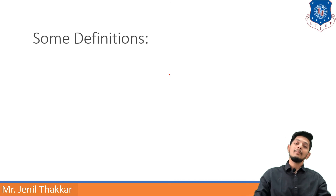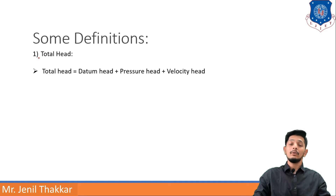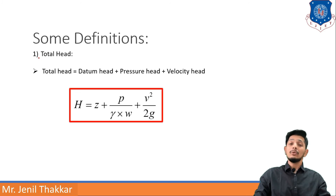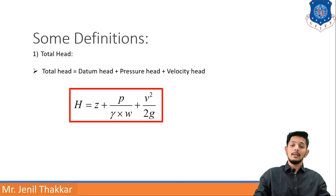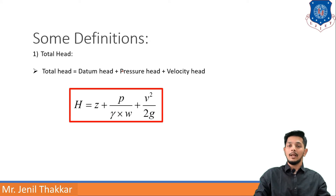Let us move to some basic definitions. Total head is made up of three components: datum head, pressure head, and velocity head. The formula is: Total head H = z + p/γw + v²/2g, where z is datum head, p/γw is pressure head, and v²/2g is velocity head.